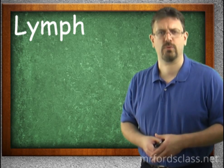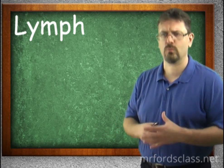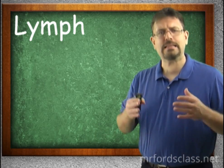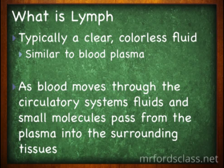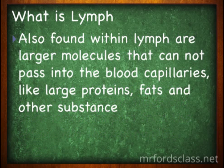So what is lymph? We're talking about a fluid here. Lymph is a clear, colorless fluid for the most part — very similar to blood plasma. It can be more of a creamy white, especially if it's high in dietary lipids. But in general, lymph is a clear, colorless fluid, very similar to blood plasma. As blood moves through the circulatory system, fluid and small molecules pass from the plasma into the surrounding tissues. Also found within lymph are large molecules that cannot pass into the blood capillaries — like large proteins, fats, and other substances.